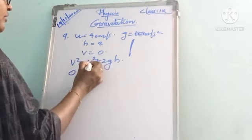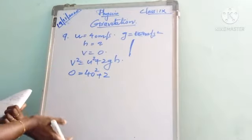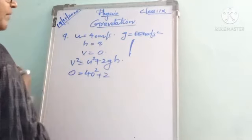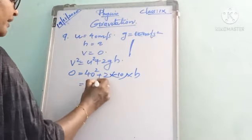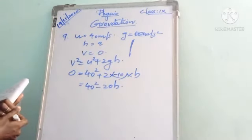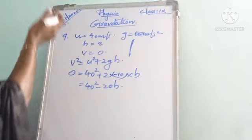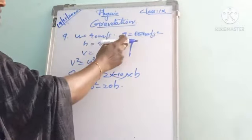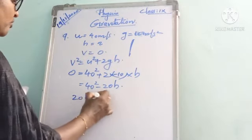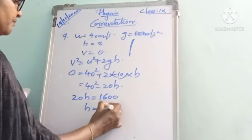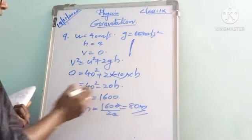At maximum height, final velocity V = 0. Using V² = U² + 2gH with g taken as negative (upward motion): 0 = 40² + 2×(−10)×H, so 40² = 20H, H = 1600/20 = 80 m. The maximum height is 80 m.